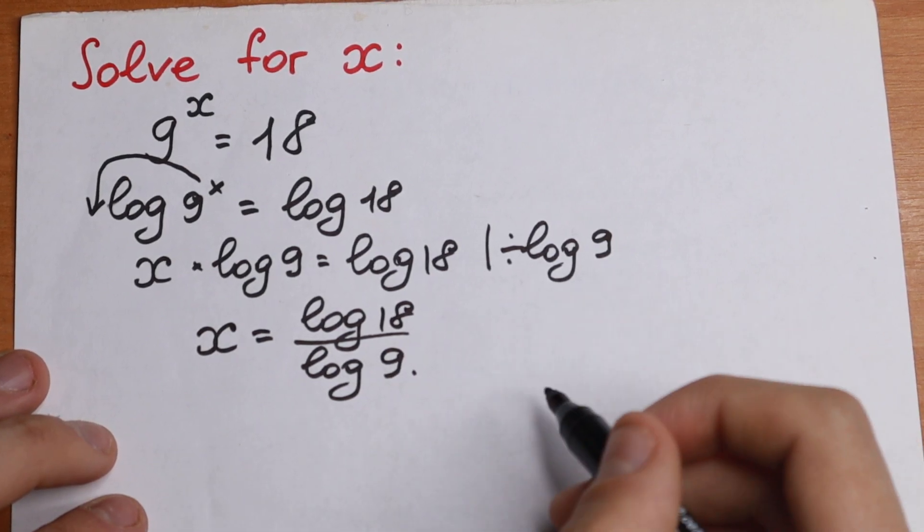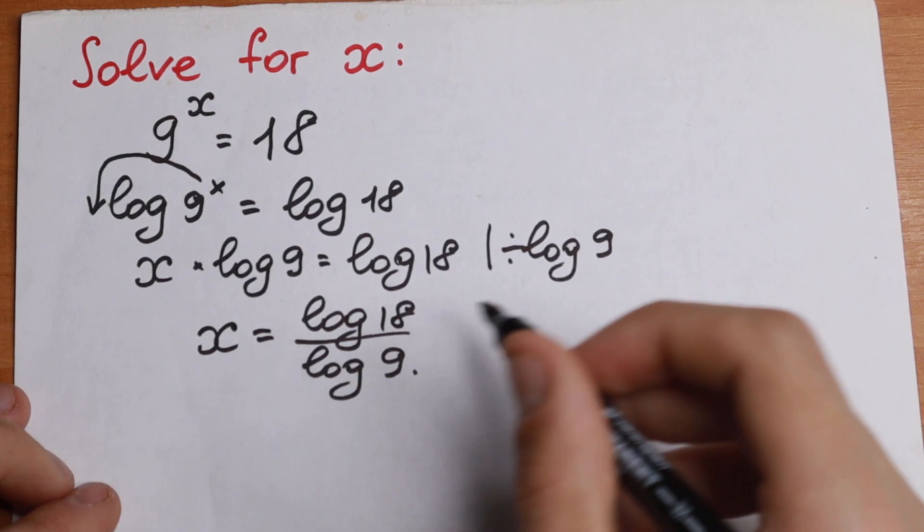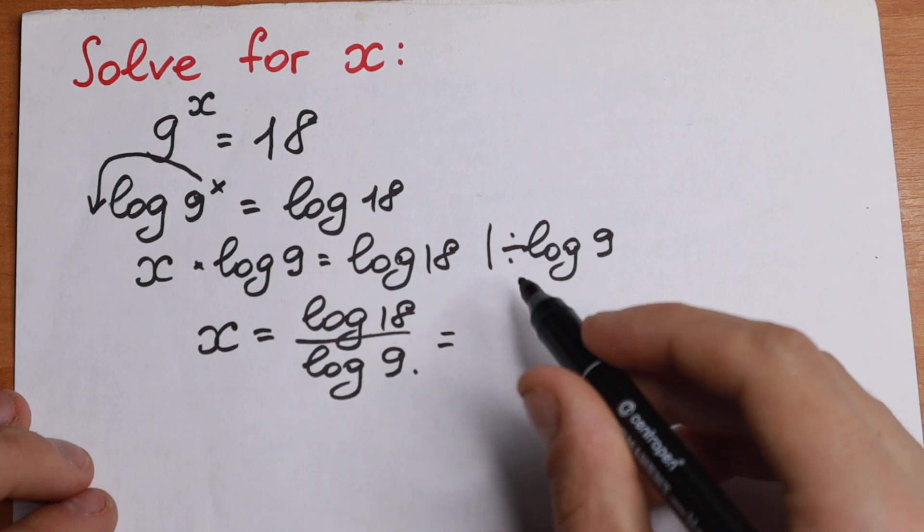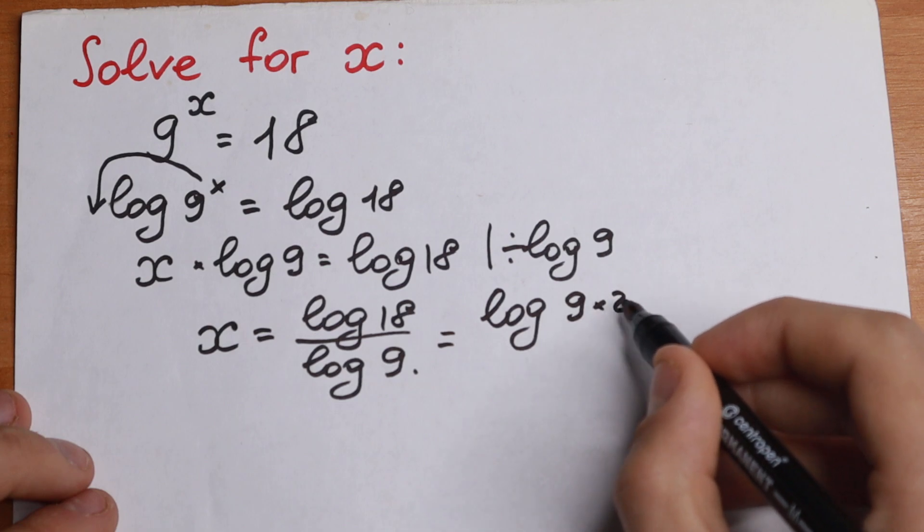And it will be our answer, but we can simplify this, and moreover we remember and we learn a lot of logarithm rules. So first rule, take a look, if we write this 18 as 9 times 2, we'll have log 18, we write as 9 times 2.